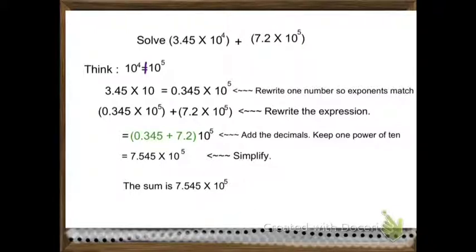3.45 times 10 equals 0.345 times 10 to the 5th power. We write the number so the exponents match.